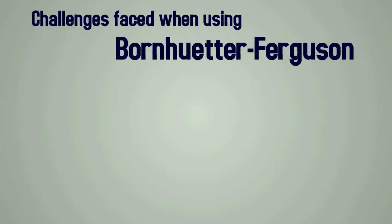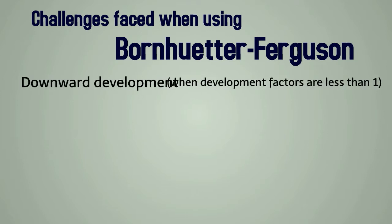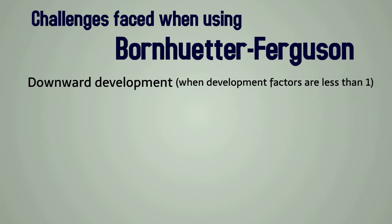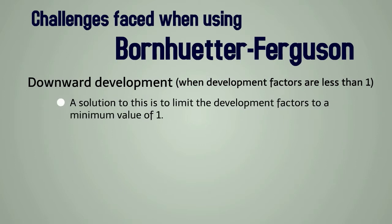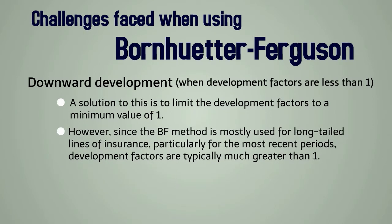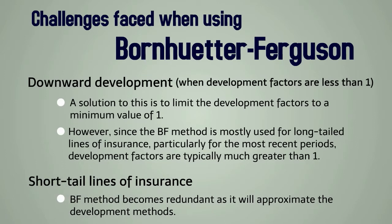There are some challenges that can be faced when using the Bornhuter-Ferguson Method. For example, when development factors are less than one, a solution would be to limit the development factors to a minimum value of one. However, since the method is mostly used for long-tailed lines of insurance, development factors are typically much greater than one. For short-tailed lines of insurance, the Bornhuter-Ferguson Method becomes redundant as it will approximate the development methods.